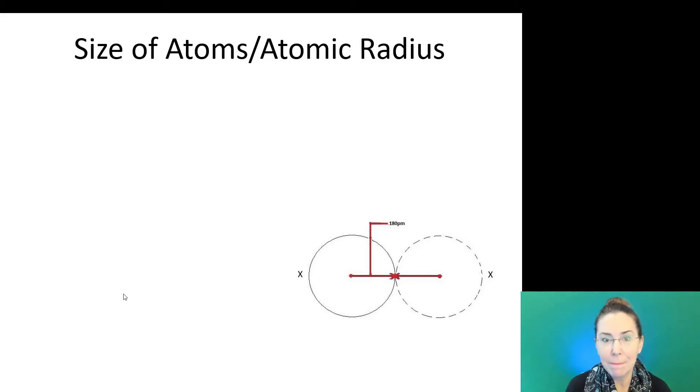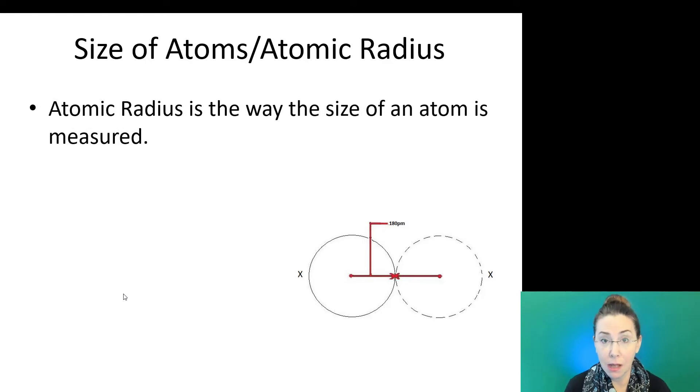So when we try to measure an atom, we measure it using something called atomic radius. This is the standard and this is what you will find on table S of your chemistry reference table for most of our elements.